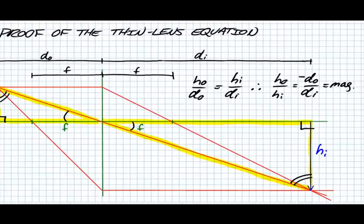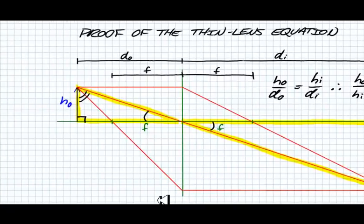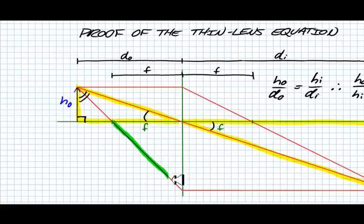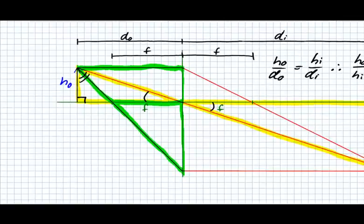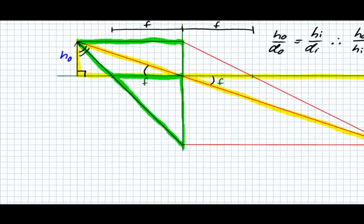Now what we're going to do is focus on two more similar triangles. Those consist of this triangle right here and then this triangle right there. So again, ratios of corresponding sides are going to be equal. And so we have two similar triangles.